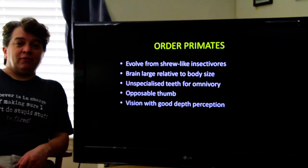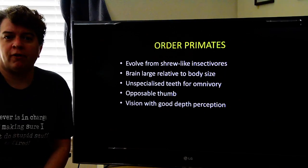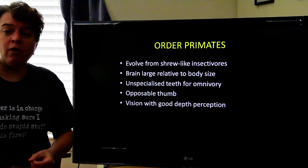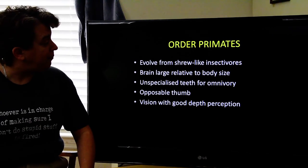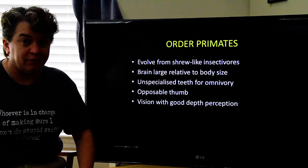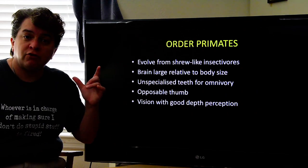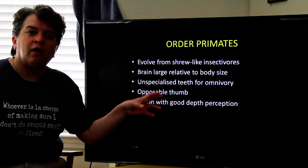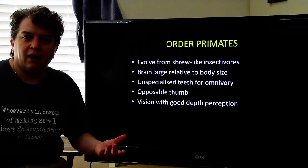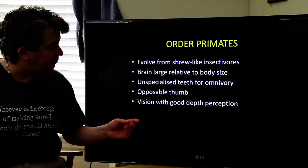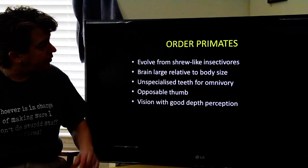Welcome to the human evolution lecture. We'll look at where humans come from and where we might be going. We belong to the order Primates, which evolved from shrew-like insectivores. Primates tend to have a brain that's quite large compared to body size, they tend to be omnivorous, they have an opposable thumb, and vision with very good depth perception.